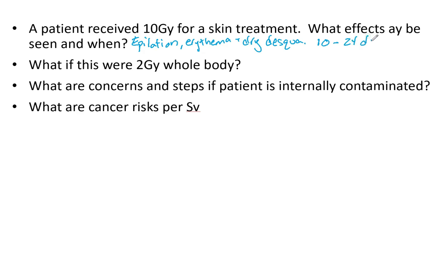Specifically know that the effects for this dose range are probably going to be seen 10 to 24 days after the fact. If this were 2 gray whole body, which is within the bone marrow effects range — remember photons and sieverts are essentially equal, so 2 sieverts equates to 2 gray — you will have some of those bone marrow effects, and that is going to be 2 to 3 weeks later.